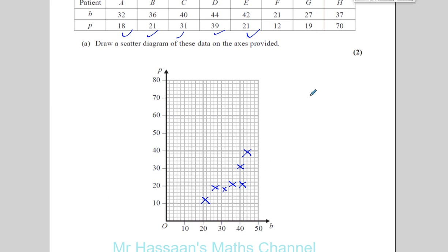And then finally you got 37 and 70. 37, which is 36, 37 and 70 is all the way up here. That's 2, 4, 6, 7. Okay, that's patient H. So we've got all the data points plotted now. So that's two marks for question A.